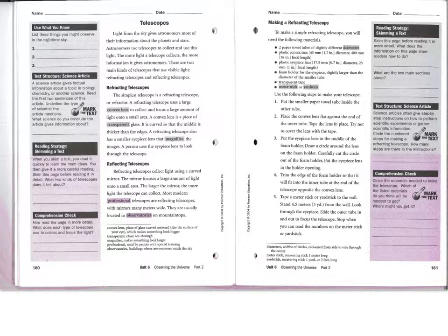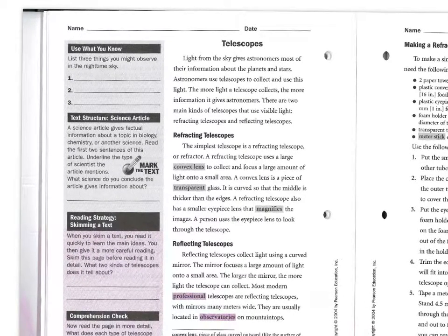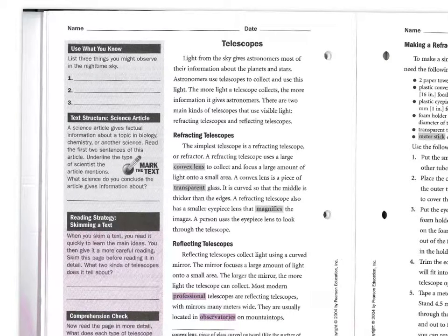Hello, we are looking in Shining Star B, Unit 6, Part 2, the text 'Telescopes,' and this is the annotating exercise in your workbook. I talked with many of you about very carefully following the directions on the side. These directions are helping you to do a deeper read, a closer read — we call it close reading — of the text, which is an important common core standard.